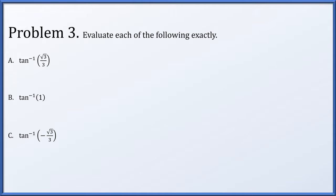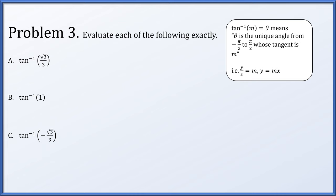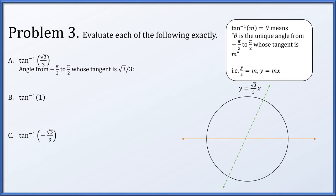In problem 3, we evaluate the following expressions exactly. The arc tangent of m equals theta by definition means theta is the unique angle between minus pi over two and positive pi over two whose tangent is m — in other words, the ratio y over x at the point on the unit circle that theta points to equals m. In item a, we're looking for an angle between plus or minus pi over two whose tangent is root three over three. The line y equals root three over three times x intersects the circle twice, but only once for an angle between plus or minus pi over two. That angle is pi over three.